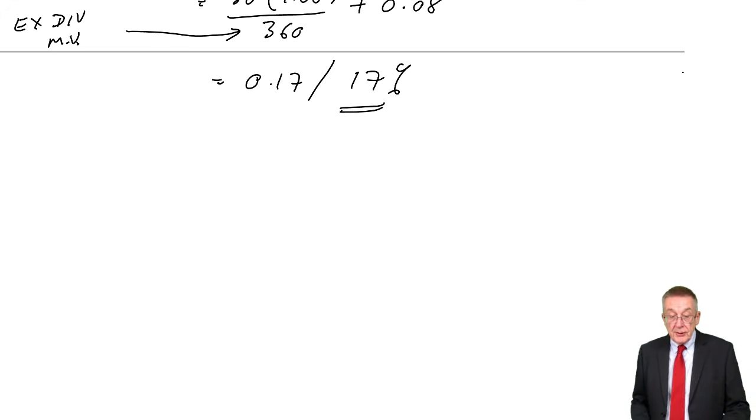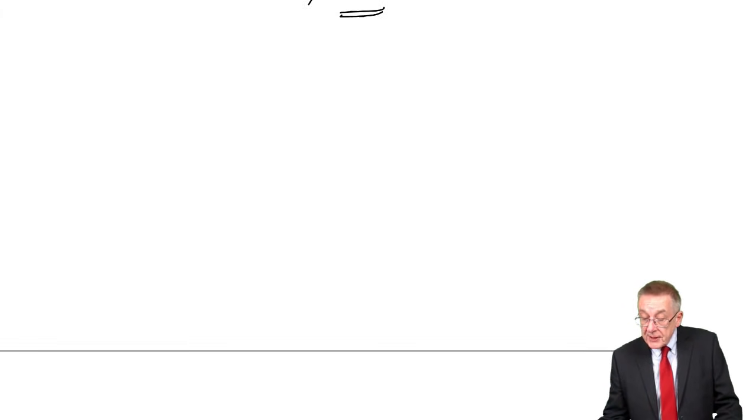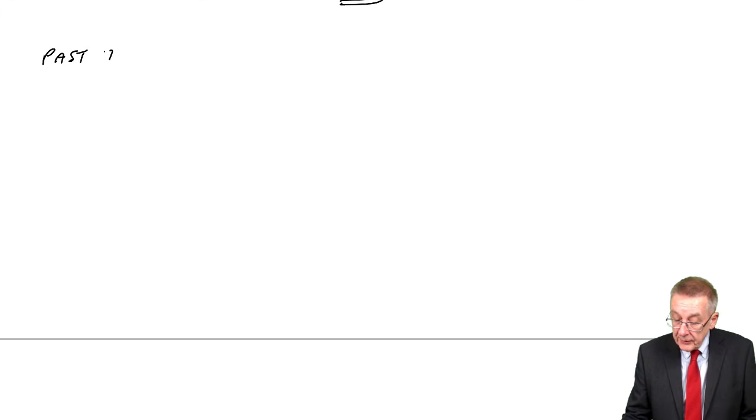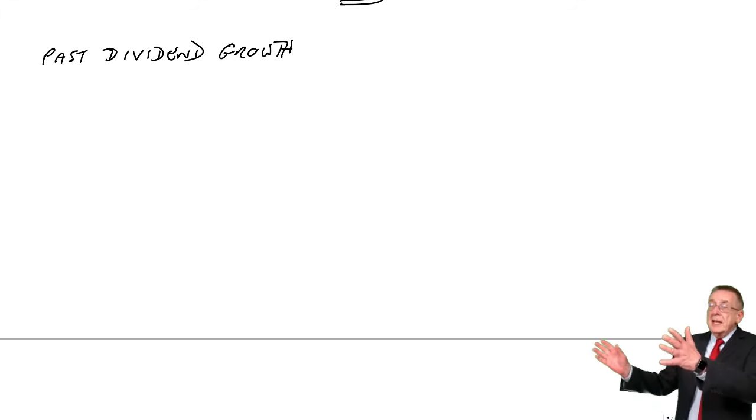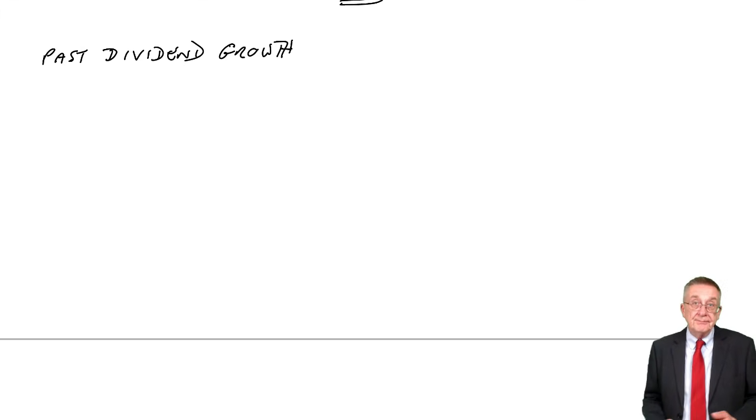There's one way in which he can make that a bit more interesting, which is to do with the growth rate. In all those examples we've just done, you were told dividends are growing at 6%, at 8%. Very often he does tell you the rate of growth. However, he can expect you to estimate the rate of growth, which you'll then use in the formula. There are two ways he can ask you to do it. The first, perhaps the most obvious, is to look at past dividend growth.